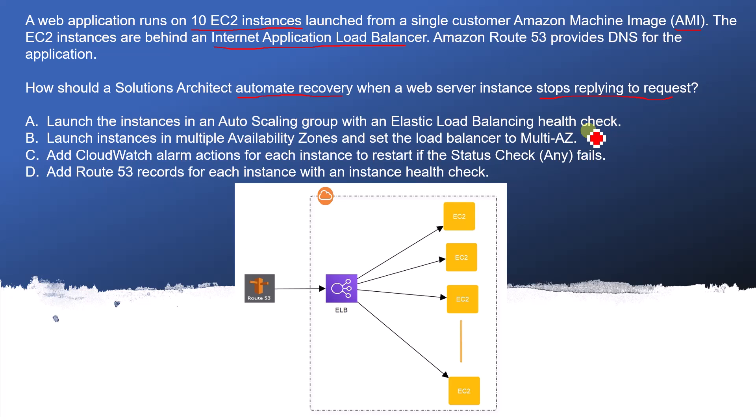Option B: Launch instances in multiple availability zones and set the load balancer to multi-AZ. This will increase availability, but the question asks how we can automate recovery. This is not the correct answer because it does not talk about auto scaling at all. Even if we launch into multiple availability zones, if any instance goes down we will not be able to recover without auto scaling. So it is a wrong option.